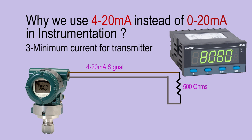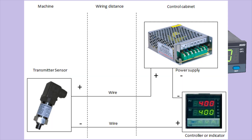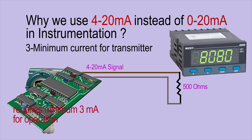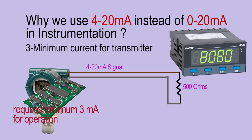Reason number three is the minimum current required for transmitter operation. Most modern transducers use two-wire connections, meaning there is no separate wiring to power the transducer. The transducer's electrical circuit uses the 4 milliamp minimum signal current for its own operation, so this 4 milliamp baseline provides the power needed to run the transducer.